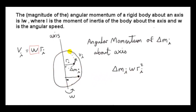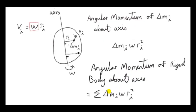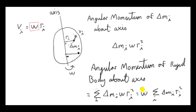To get the angular momentum of the entire rigid body, we sum the angular momentum of all the particles. Using the summation sign over i, and noting that omega is just a constant appearing in all momentum terms, we can take it outside the summation sign. What we're left with is the sum of the products of all the masses of the particles with the square of the distance to the axis — that's the moment of inertia of the entire body about this particular axis.